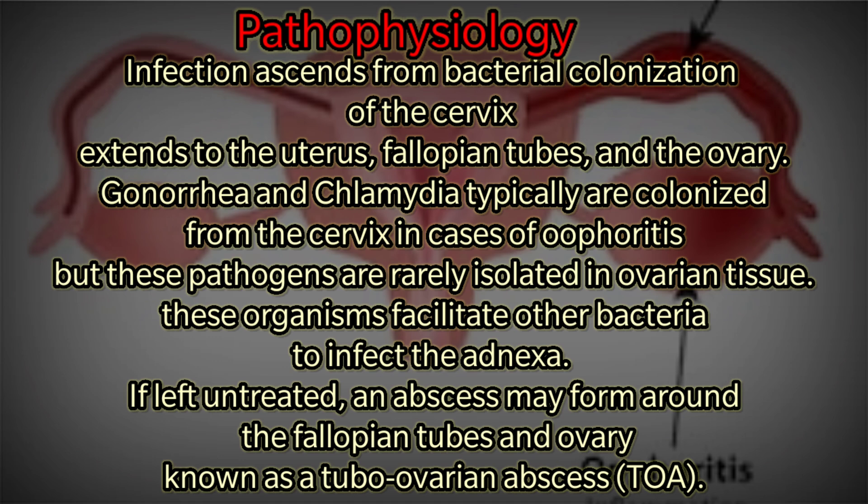Pathophysiology: infection ascends from bacterial colonization of the cervix and extends to the uterus, fallopian tubes, and the ovary. Gonorrhea and chlamydia typically are colonized from the cervix in cases of oophoritis, but these pathogens are rarely isolated in ovarian tissue.